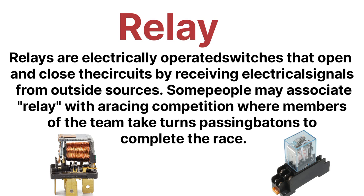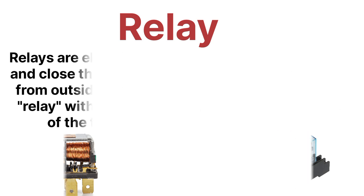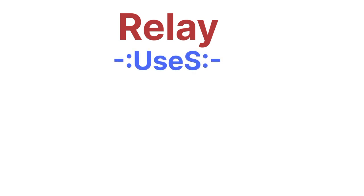Whenever current flows through the coil of wire, it becomes a temporary magnet — that's what makes it an electromagnet. Without electricity, we cannot make it a magnet, so we make it an electromagnet using a coil of wire. Whenever current flows through that coil, it becomes the electromagnet, which is why it is known as the heart of the relay.